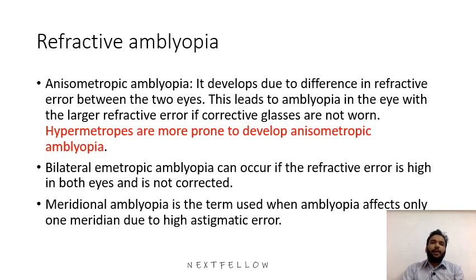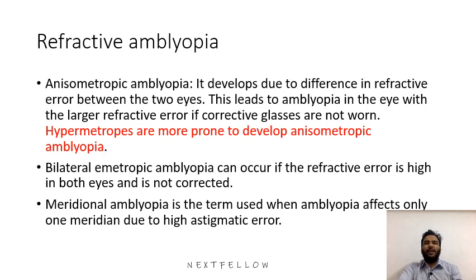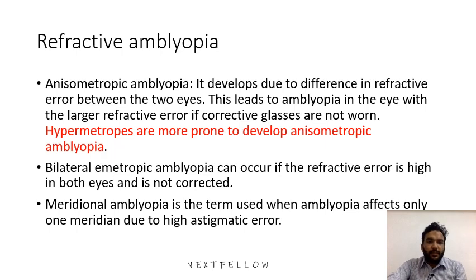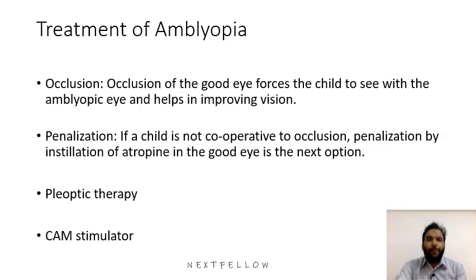There is also bilateral ametropic amblyopia, which can occur if the refractive error is high and uncorrected — for example, minus 6 in both eyes without correction. However, minus 1 or minus 2 in both eyes will not usually cause bilateral amblyopia. Meridional amblyopia occurs in the case of high astigmatic error, where cylindrical power tends to cause amblyopia along a specific meridian.